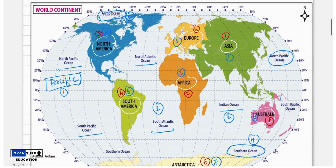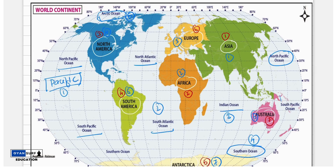The Atlantic Ocean is between North America, South America, Europe, and Africa — it has an S shape, divided into North Atlantic and South Atlantic. The Indian Ocean is between Africa, Asia, and Australia. The Southern Ocean is between Australia and Antarctica, and the Arctic Ocean is above North America.